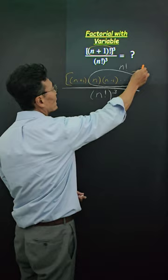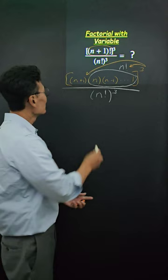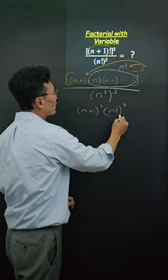So what we're going to do is take the 3, distribute it to the n plus 1 and also the n factorial, giving us n plus 1 to the third power times n factorial to the third power, all over n factorial to the third power that we had originally.